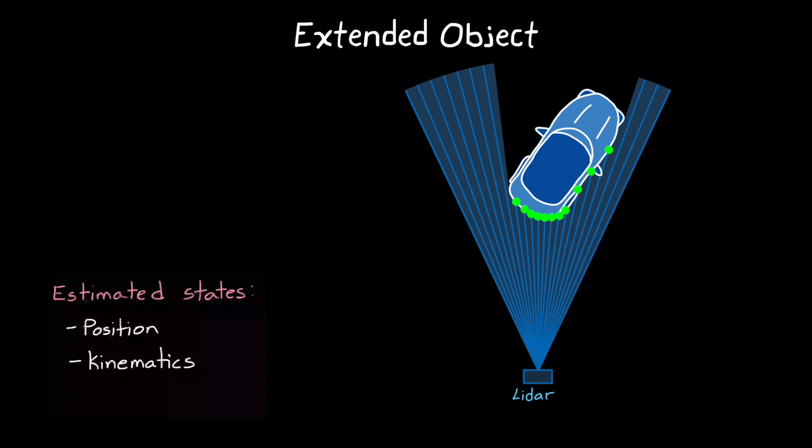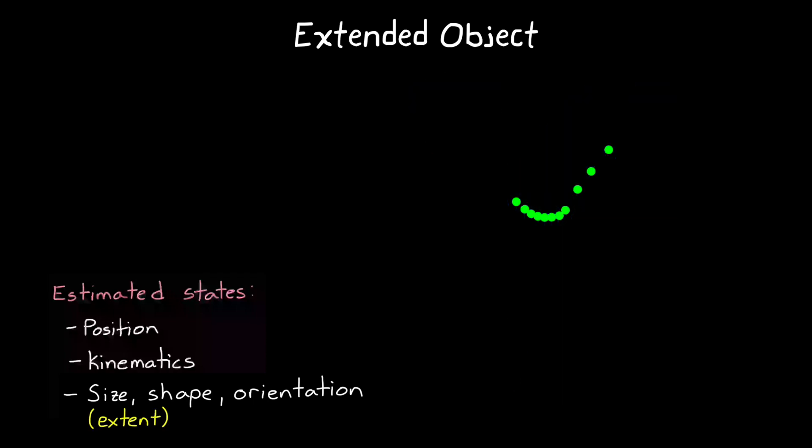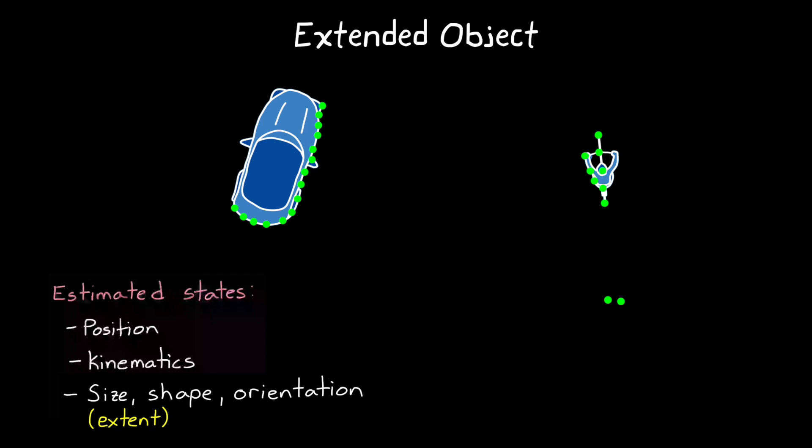And this is information that we can use to better understand the state of each of these objects. But with this additional information, we can estimate more than just position and kinematic states like we did with point objects. We can estimate the size, shape, and orientation of the tracked objects as well. And we may call this the object's extent. For instance, if these are the returned measurements for a car, a bicycle, and a pedestrian, then just looking at this, we could imagine one possible scenario of the size, shape, and orientation of each. And over time, as we watch these objects move, we could become more confident in our estimate of the extent. And it would be really nice if our tracking algorithm could do the same, because understanding the extent of other objects in the environment is critical to placing them within the map. And it can mean the difference between planning a path that avoids the object versus treating it as a point and crashing into it.